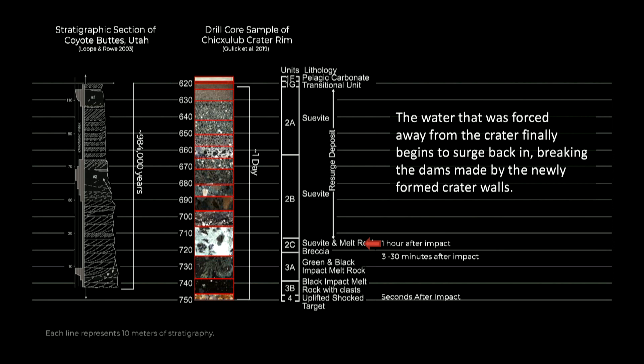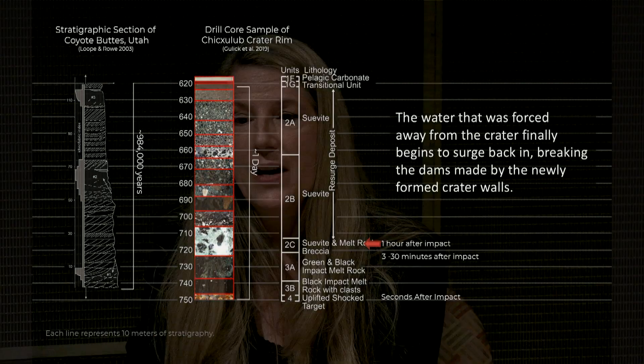Followed by a layer where the water was forced away because, of course, it excavated all the water out, which then went in tsunamis out to other corners of the earth. Finally, it begins to surge back in, breaking the dams of the newly formed crater walls.